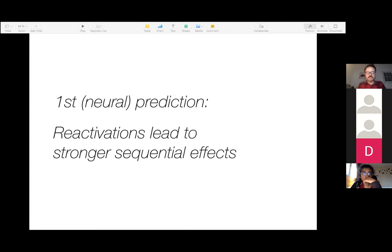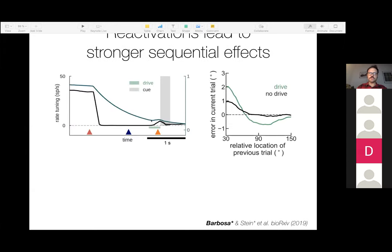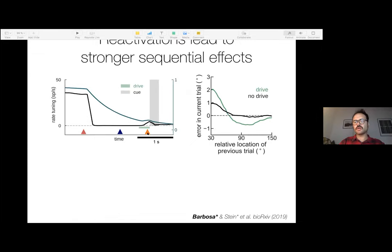Okay. So we're able to simulate these findings. And now, of course, we want to push the model further and try to predict stuff that we didn't know. So we have a few predictions in the paper. I'm going to introduce you to three of them that I think are the most cool ones. So the first is that reactivation should lead to stronger sequential effects. So here in this model, if I run many of these simulations and now I compute the behavior from this model, you can see here that when I have reactivations at this point, the serial bias are much stronger than when I don't have. Okay. So this is the model.